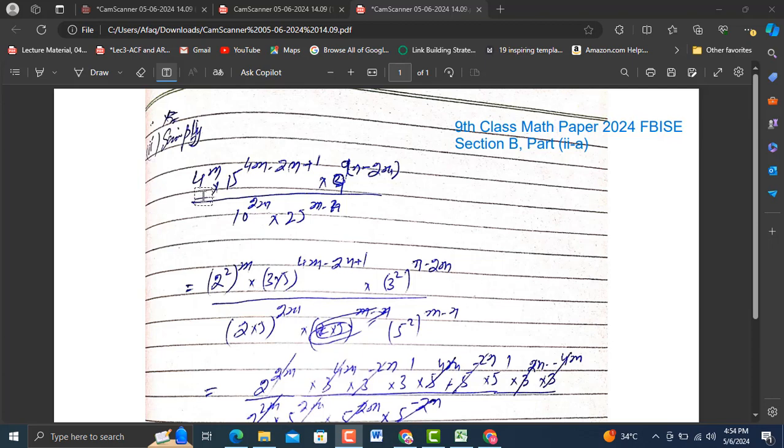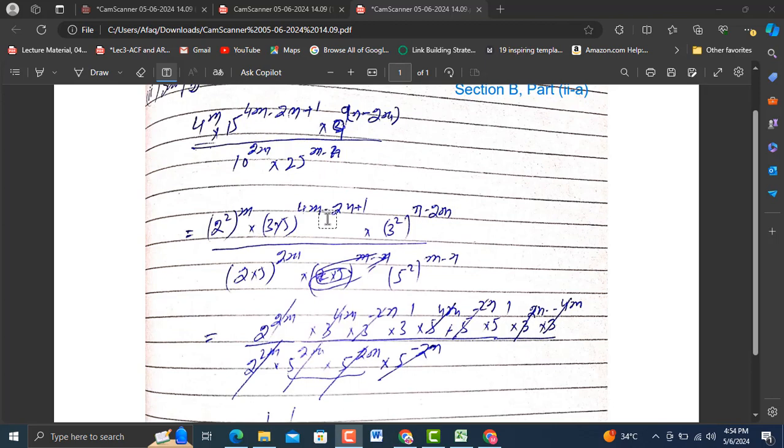So here is the question: 4m into 15 raised to power 4m minus 2n plus 1, into 9 raised to power n minus 2n, divided by 10 raised to power 2m into 25 raised to power minus m minus n. Now I am going to decompose the powers into their respective elements after decomposing their base.